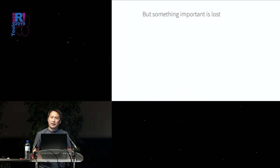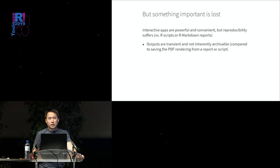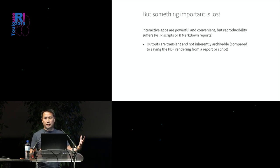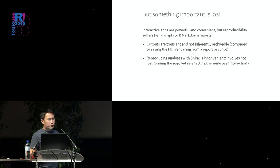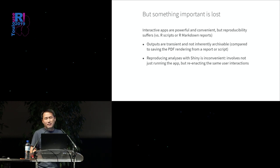That interactivity is great, but in order to give you it, we've lost something really important. Compared to traditional R scripts or R Markdown reports, we've taken a step back in terms of reproducibility. First, when looking at the output of a complex Shiny app with lots of tabs, there's no easy way to save outputs for archival purposes or to email them — whereas a report or script easily produces a PDF or HTML document. And even with source code, reproducing the analysis is inconvenient: you also have to manually put the app in the same state, which introduces the possibility for error.